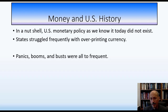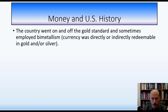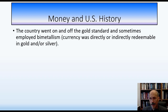In short, U.S. monetary policy as we know it today did not exist. States struggled with overprinting money, multiple states and hundreds of commercial banks issued paper — no wonder things didn't work. We had panics, booms, and busts that plagued this country. The country went on and off the gold standard and sometimes employed bimetallism. We've since moved to pure fiat money, not backed by gold, which is why things like Bitcoin have popped up as an alternative to government-based money.